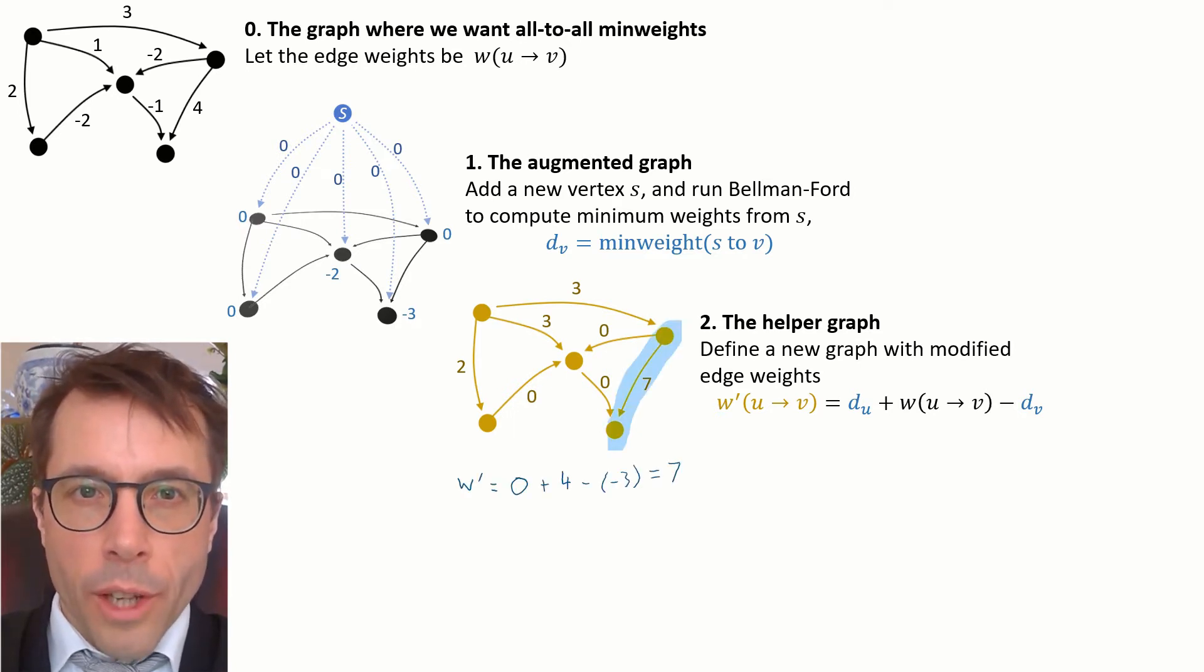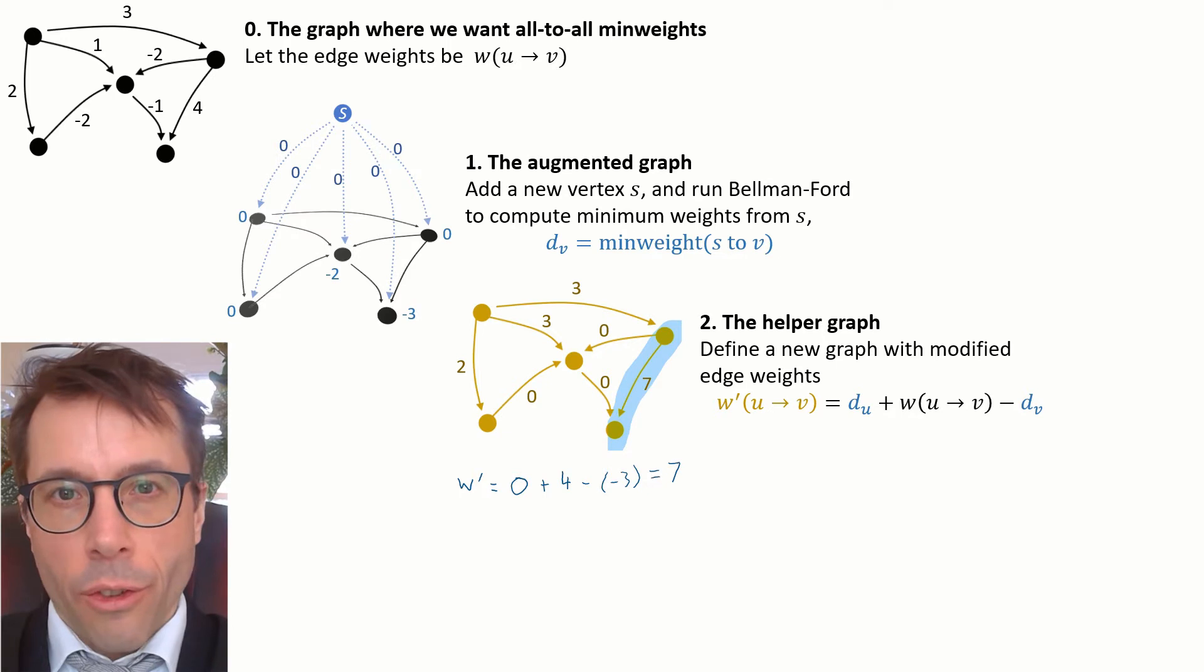So for example, take this edge. We'll give it weight 7, which is the d value at the start vertex, 0, plus the original edge weight 4, minus the d value at the end vertex minus 3, giving total weight 7.